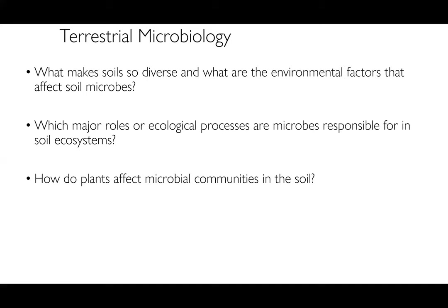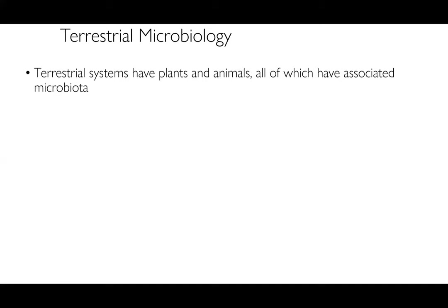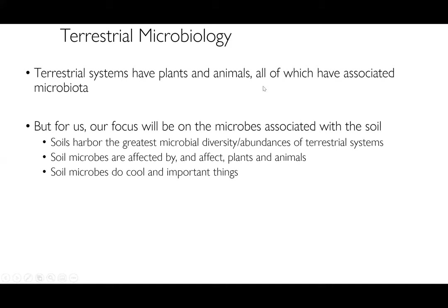The third question is how do plants affect microbial communities in the soil. Terrestrial systems are this mixed bag of plants and animals, and everything on this planet — whether it lives in the ocean or on the land — has an associated microbiome. But we're going to focus simply on the microbes associated with soils themselves, largely ignoring host-associated communities, and diving a little bit into plants.